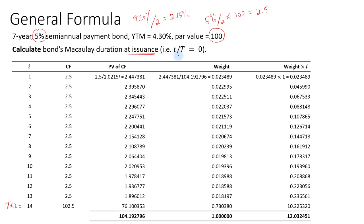Since this is at issuance and not between coupon payment dates, the fractional period equals 0. We list all the cash flows: $2.50 every 6 months, and in period 14 there is the face value of $100 plus the coupon. We take the cash flows and discount them by dividing by (1 plus the yield per period of 2.15%) to the power of each period from 1 to 14. Once we get the present value of the cash flows, we sum them up to get the full price of the bond.